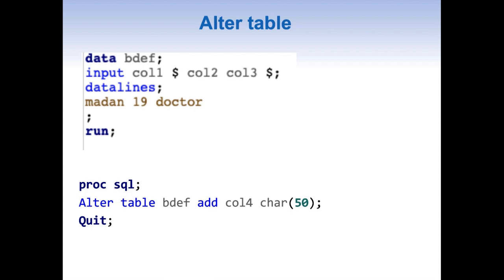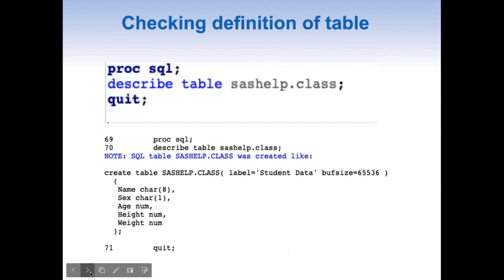Now let's see how we can view the definition of a table. To get the table definition, we use the DESCRIBE TABLE statement — simply write DESCRIBE TABLE followed by the table name. We will see the output in our log: it shows how the table was created and looks similar to the CREATE TABLE statement. For this kind of thing, we generally also use PROC CONTENTS.